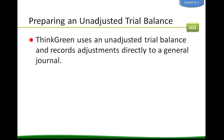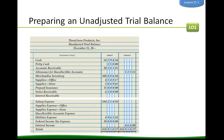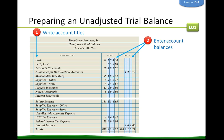Think Green uses an unadjusted trial balance and records adjustments directly into the general journal. Step one: write the title of each general ledger account in the account title column, in the same order they appear in the general ledger. All accounts are listed regardless of whether there is a balance, reducing the possibility of overlooking an account. Then write the balance of each account in the appropriate debit or credit column, taken from the general ledger. Finally, total, prove, and rule the column totals — if debits equal credits, all is good.